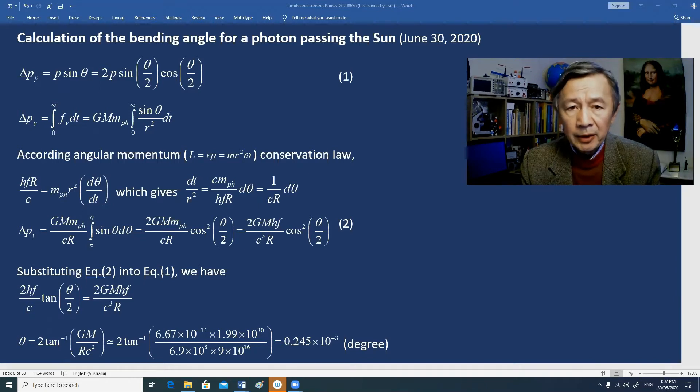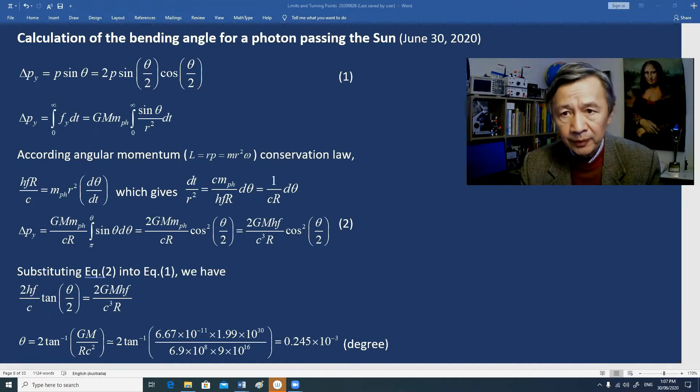Hi, today I'm going to calculate the bending angle of a photon passing the Sun without using Einstein's general relativity.